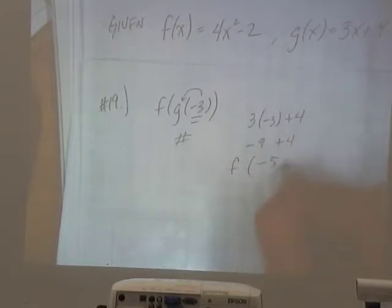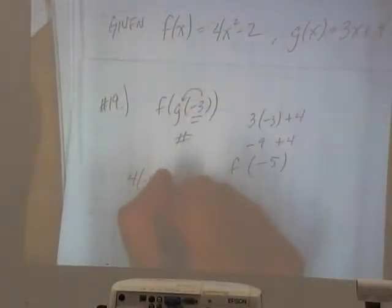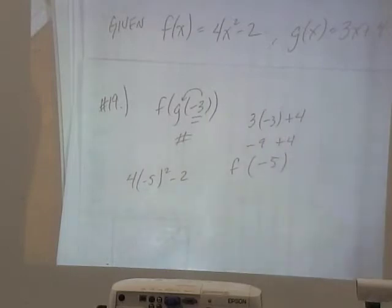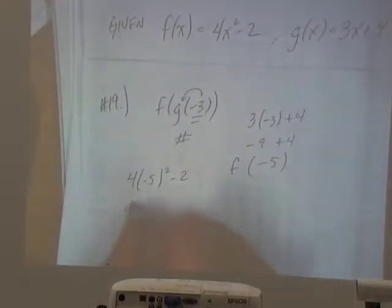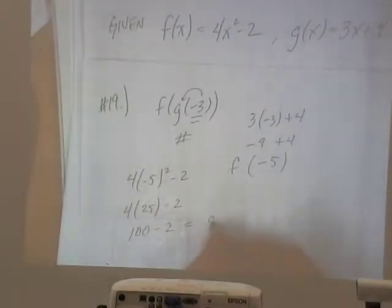So now I want to find f of that number, which is negative 5. So I plug negative 5 into the f function. So 4 times negative 5 squared minus 2. That's going to give us 4 times 25. 100 minus 2 equals 98.